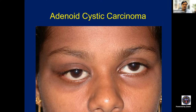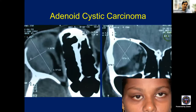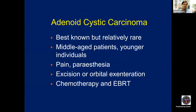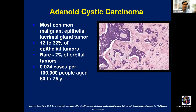This young patient with S-shaped lid deformity had adenoid cystic carcinoma of the lacrimal gland. The tumor was crossing the midline. She had pain and abnormal sensation due to the neurotrophic activity of the tumor. The tumor was large, and although the scan showed a rather smooth contour suggesting fossa formation, it turned out to be adenoid cystic carcinoma.